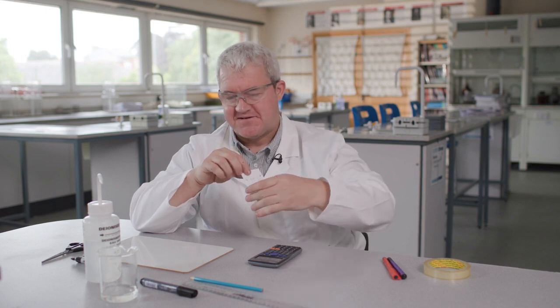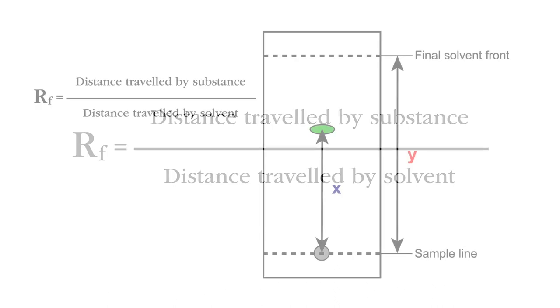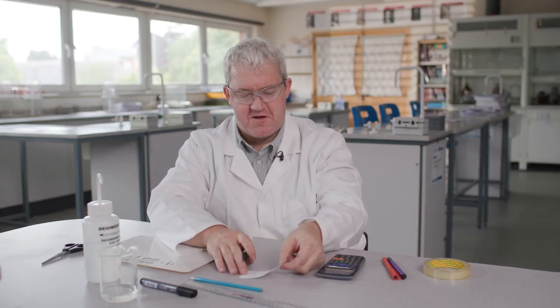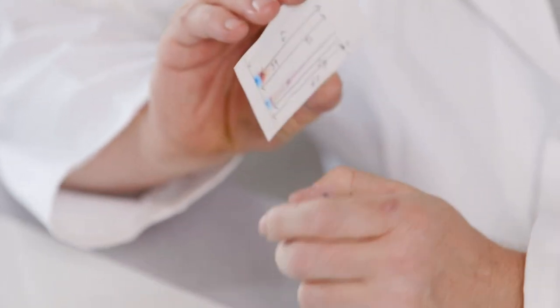So now I've marked up my chromatography paper, I can calculate the RF values. Now to calculate an RF value, we use the equation RF is equal to the residue distance, residue distance, divided by solvent front.